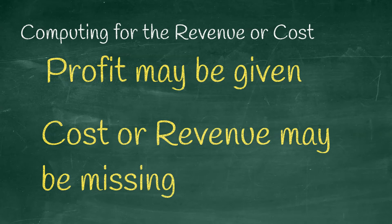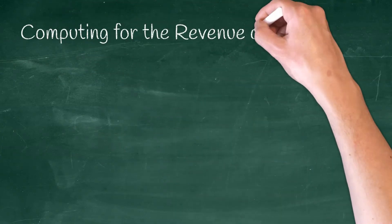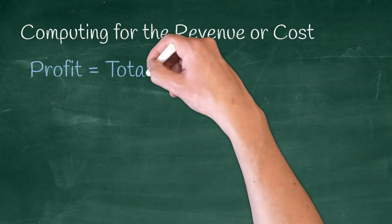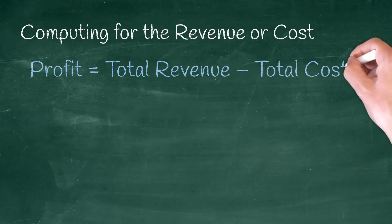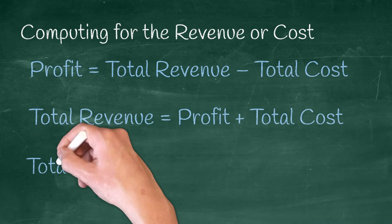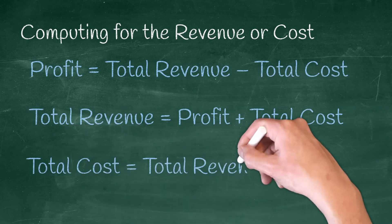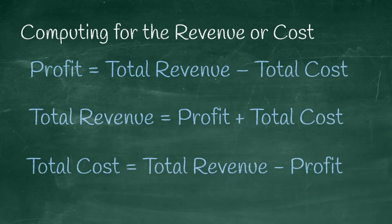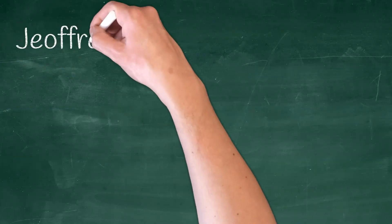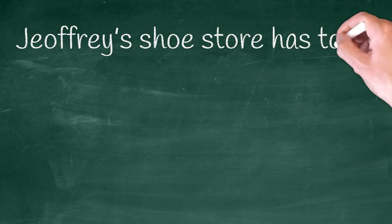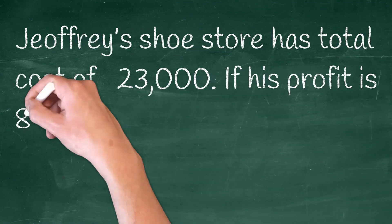If this is the case, you will need to modify the formula. Just like with other math problems, the elements of the formula can be transposed to either side of the equation if either the revenue or the cost is missing. Here is an example of a variation for the profit problem.